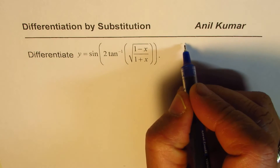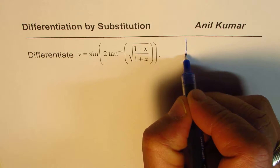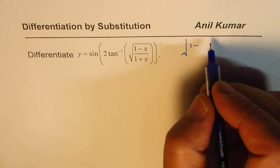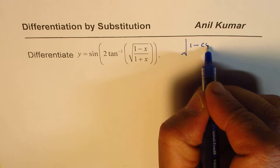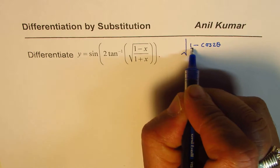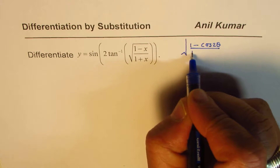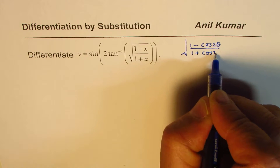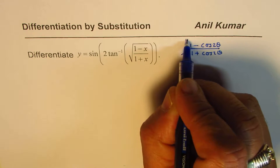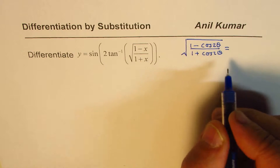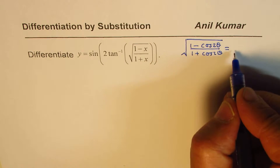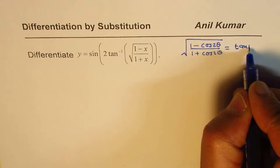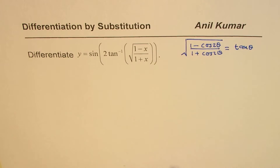We are going to look into this function, which is 1 minus cos 2 theta divided by 1 plus cos 2 theta. This expression is actually equals to tan theta.